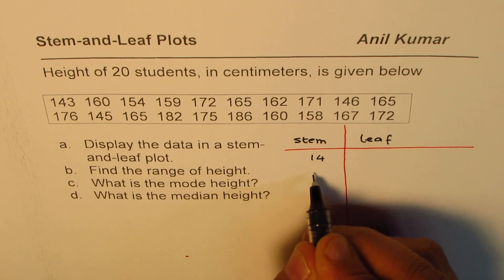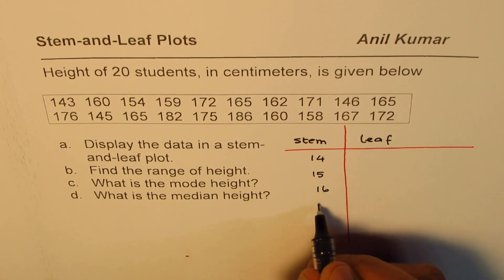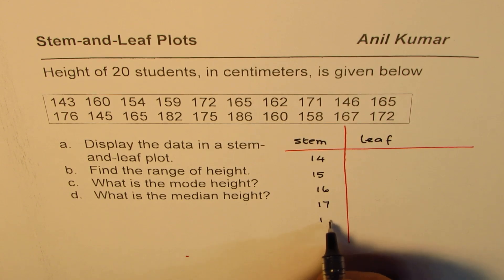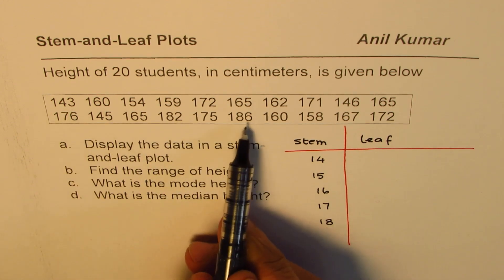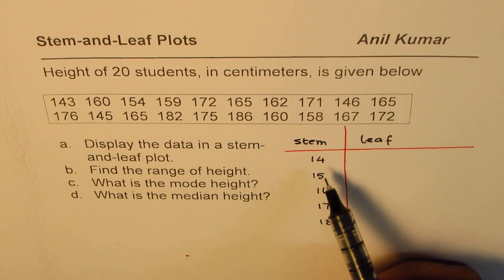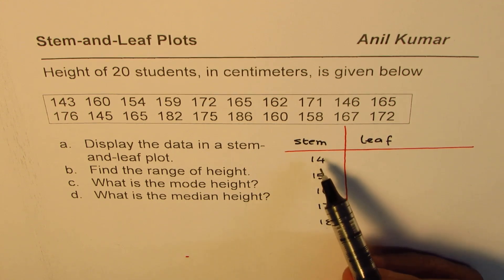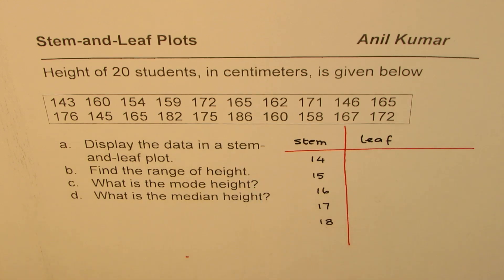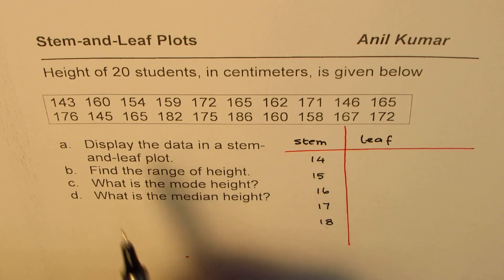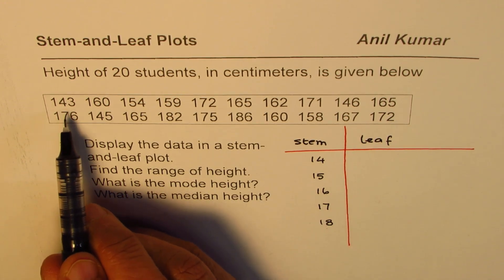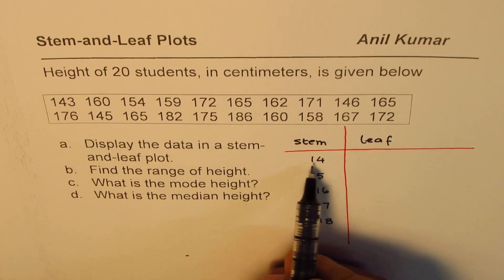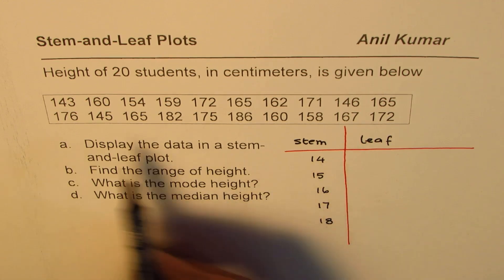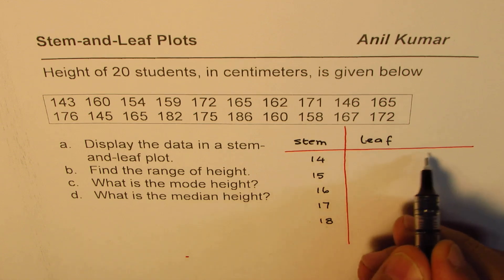So in the stem we have numbers like 14, 15, 16, 17, and 18. Looking at the highest and lowest numbers gives us the range in which these numbers will be arranged. Now we'll take numbers one by one — starting with 143. The 14 is the hundreds and tens place, and 3 is the ones place, so 3 will be written in the leaf part.